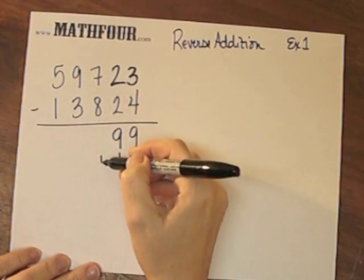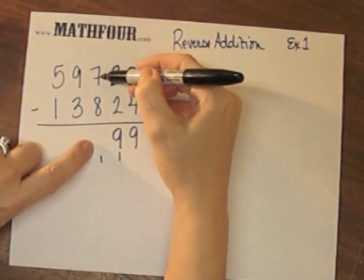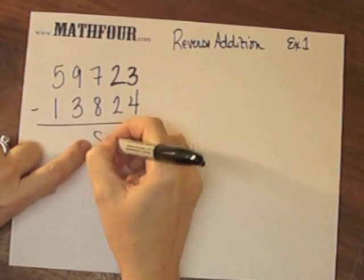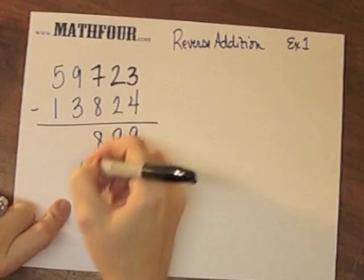8 plus 1 is 9 plus what gives me 7 or 17? Well, 9 plus 8 gives me 17, carry the 1.